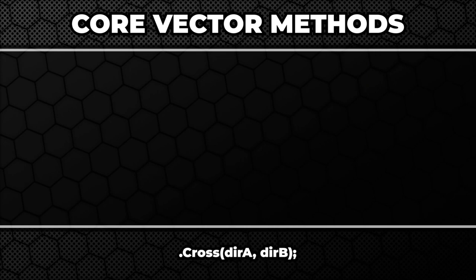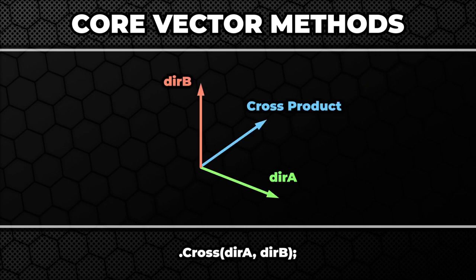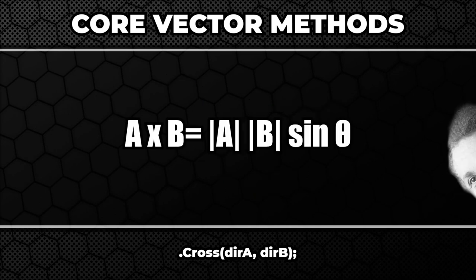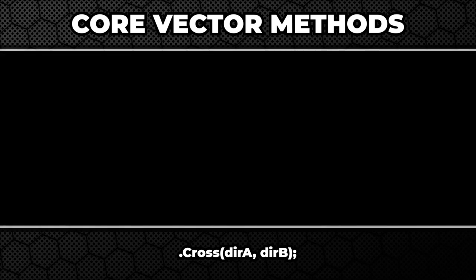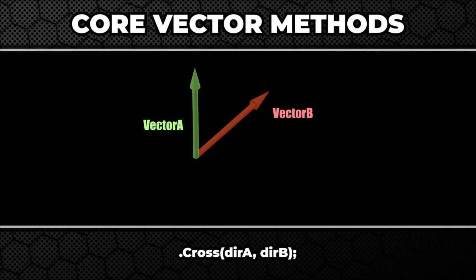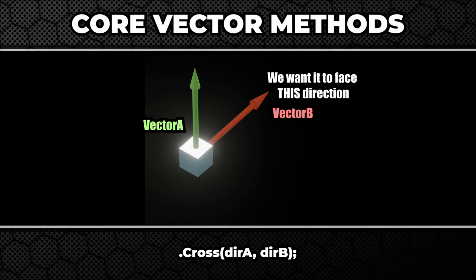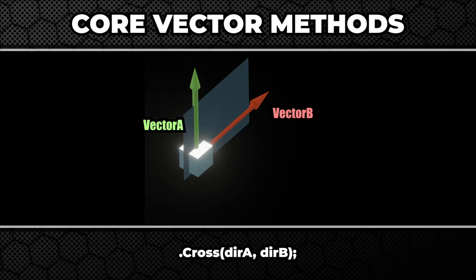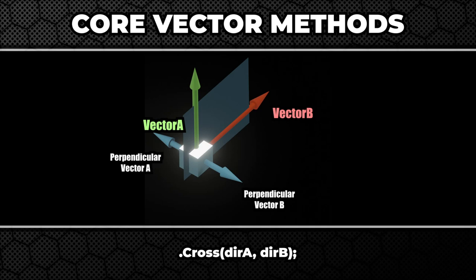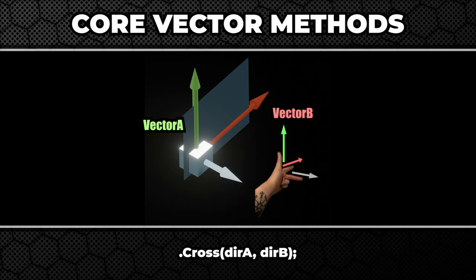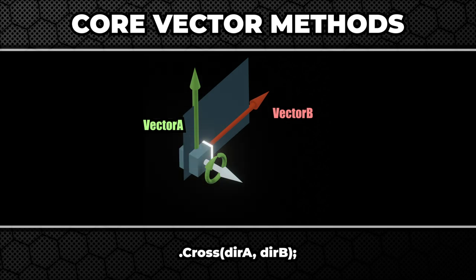Now let's have a look at the Cross method. It returns a vector perpendicular to two provided vectors. The math is a little bit complex but you shouldn't worry about that. From a practical side: imagine our object is facing the direction indicated by the first vector, and we want it to face the direction indicated by the second vector. To rotate it we need to find the rotation axis. We create a plane aligned with the first and second vector, then draw a vector perpendicular to that plane. To know which of the two perpendicular vectors is the right one, we can use our left hand. That vector is the one returned by the cross method.